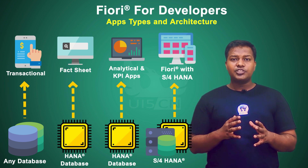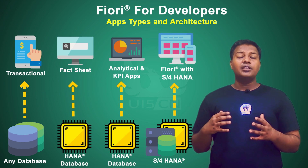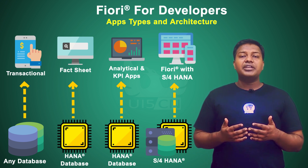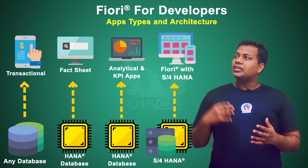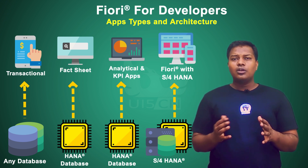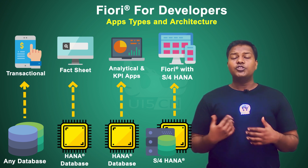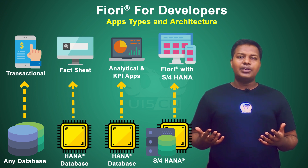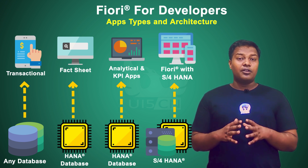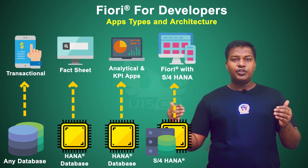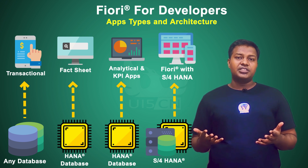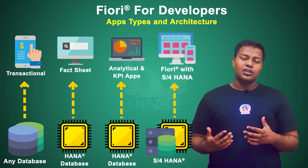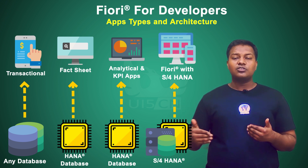The second type is the fact sheet, which is used to search across the entire business data and find contextual information related to the keywords you are searching. The third is the analytics-driven application, mostly used by business people to go through the entire database. The data is mostly consumed in the form of graphs, and these Fiori applications require heavy processing of vast amounts of data — crunching that data to produce graphical representations so users can see patterns and understand how the business is doing.